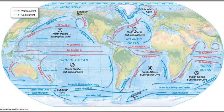There are five gyres in the world's oceans: the North Pacific, the South Pacific, the North Atlantic, the South Atlantic, and the Indian Ocean. You can see that the gyres north of the equator have water that goes clockwise, and in the gyres south of the equator the water goes counterclockwise.